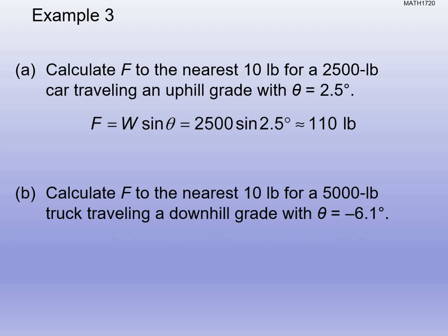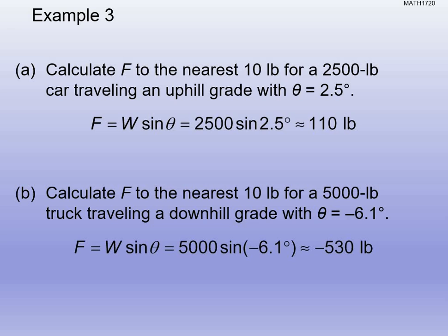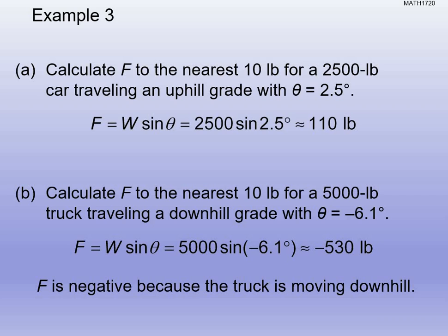For the second problem: a 5,000-pound truck going downhill on a negative 6.1-degree grade. Substituting gives a force of negative 530 pounds. The negative doesn't mean a negative force — it means direction. The force is going down rather than up. When going downhill, gravity is pushing you; when going uphill, you're fighting against gravity. Truckers need to account for this because their extra weight means more force and greater speed.